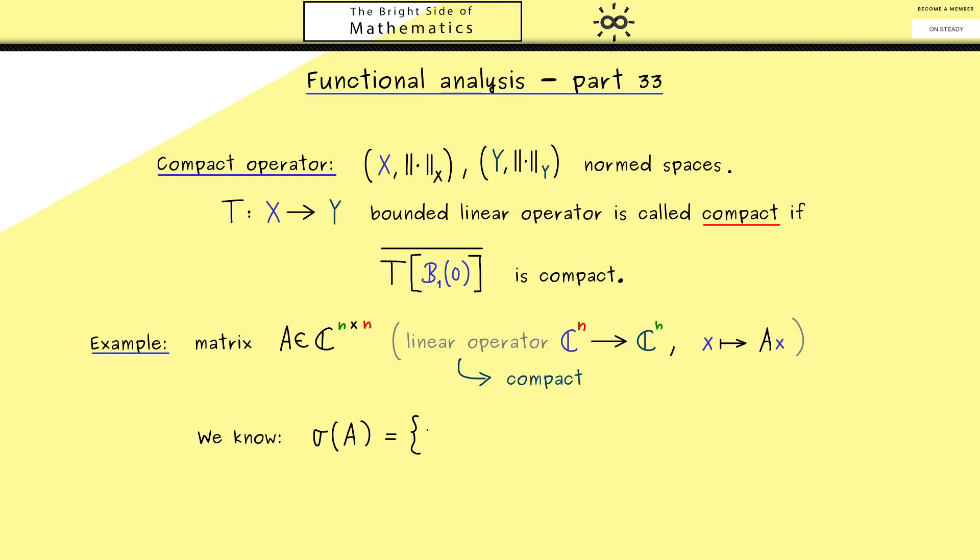And then the question is what do we know about the spectrum of this operator we also call A now. First of all we know the spectrum only consists of eigenvalues namely finitely many. So we could call them lambda_1, lambda_2 until lambda_k and we also know this can't be an empty set. But of course it's possible that we only have one eigenvalue here. Moreover we know we can also look at the eigenspaces which is given by the kernel of A minus lambda_j times the identity. In short as always we just write A minus lambda_j.